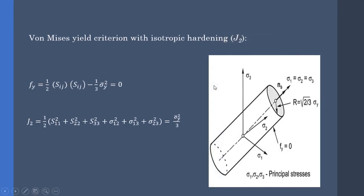For isotropic hardening, the former equation is reduced to the following. You can see that the back stress is eliminated. Since the J2 invariant is equal to the half of Sij Sij, this criterion is also called the J2 criterion.